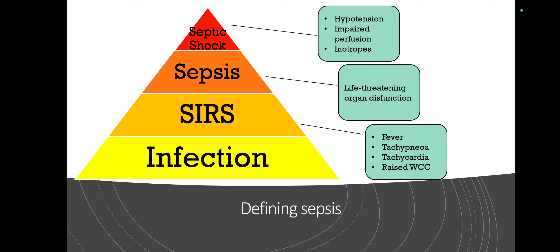Going back to what identifies each stage: a child gets infected and then develops fever, tachypnea, tachycardia, and possibly an elevated white cell count — this is the SIRS phase. If that progresses into organ dysfunction, then that's sepsis.